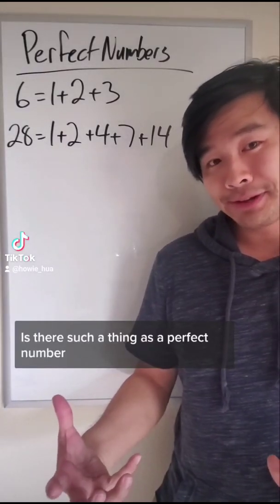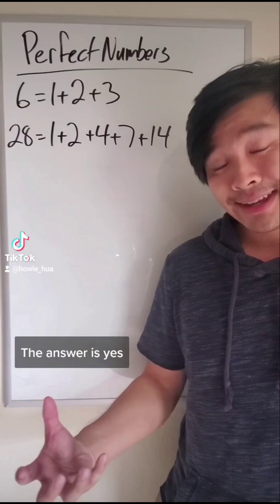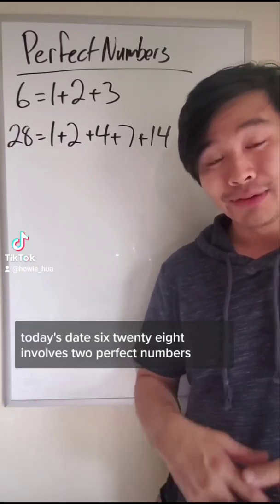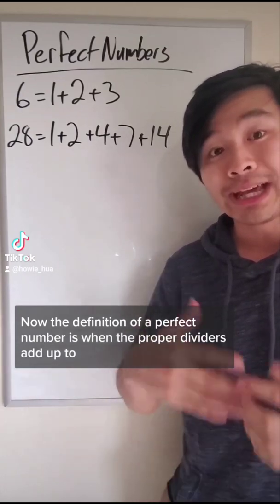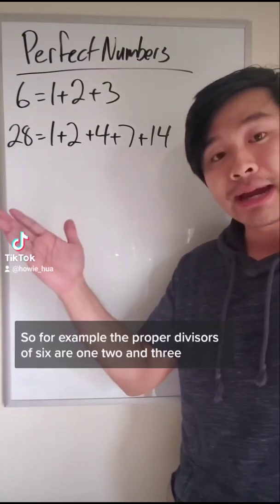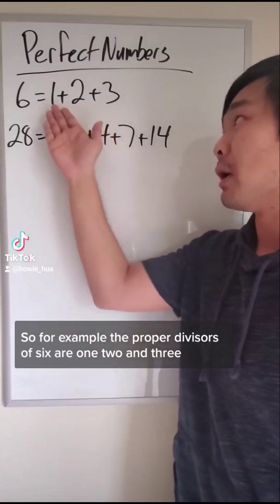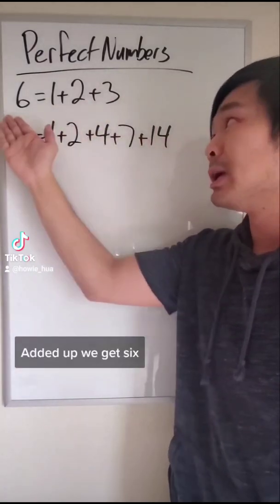Is there such a thing as a perfect number? The answer is yes. Today's date, 628, involves two perfect numbers. Now, the definition of a perfect number is when the proper divisors add up to exactly that number. So for example, the proper divisors of 6 are 1, 2, and 3. Add it up, we get 6.